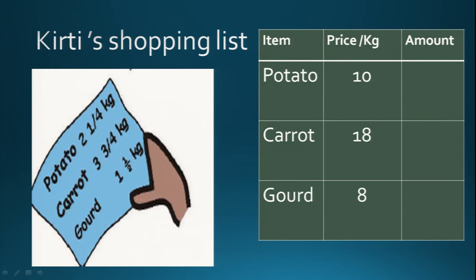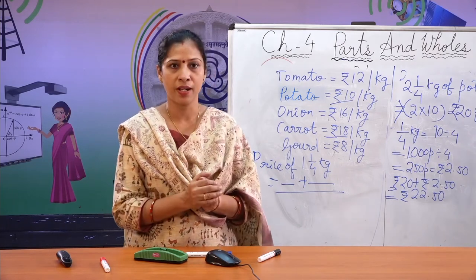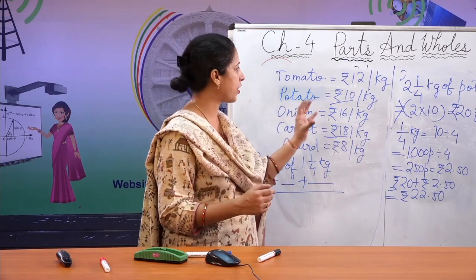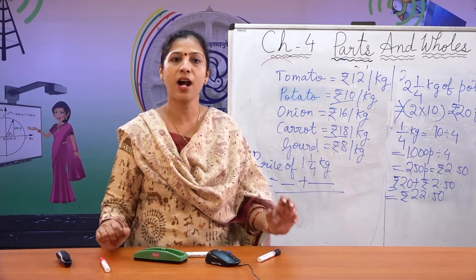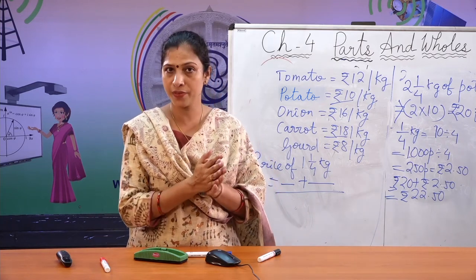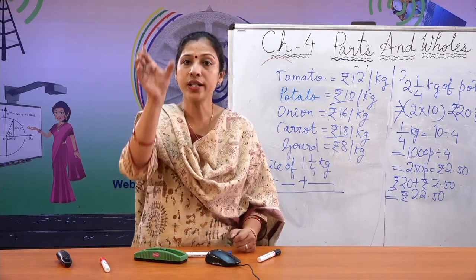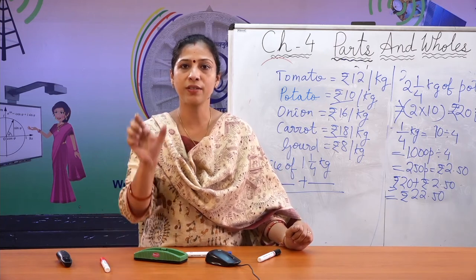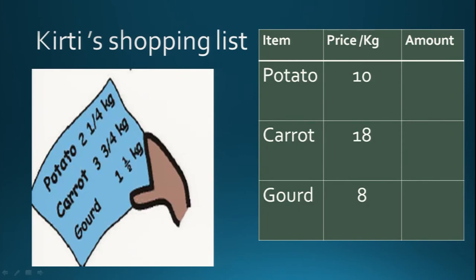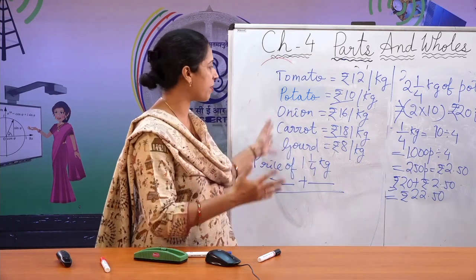After finding the price of 2¼ kg of potato, you can find the value of 3¾ kg of carrot by first finding the value of 3/4 kg, then adding to 3 kg. Similarly, find the price of 1½ kg of gourd by finding half kg first and adding to 1 kg at 8 rupees per kg. Then total the amounts for potato, carrot, and gourd to get your grand total.